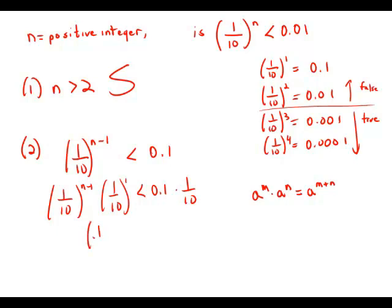When we add the exponents, what we wind up with is (1/10)^n. Meanwhile, 1/10 times 0.1 gives us 0.01.